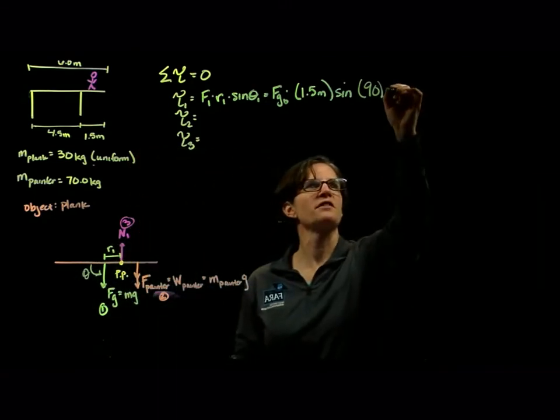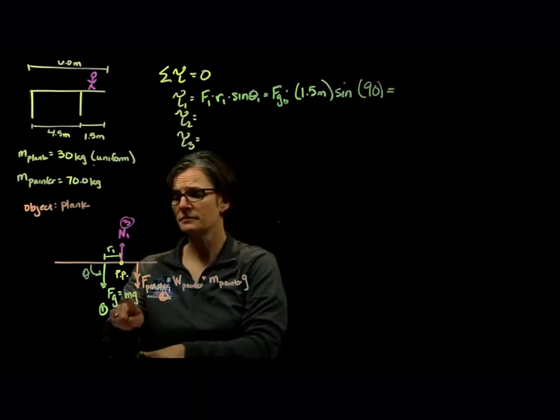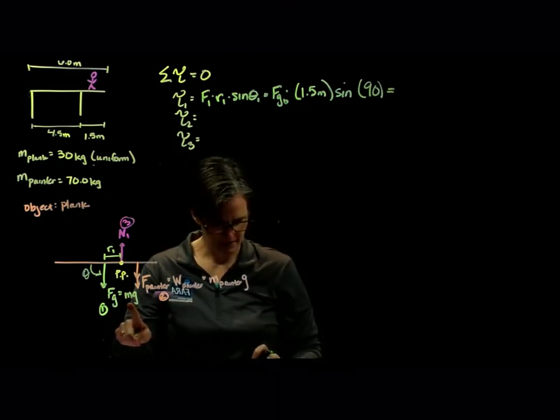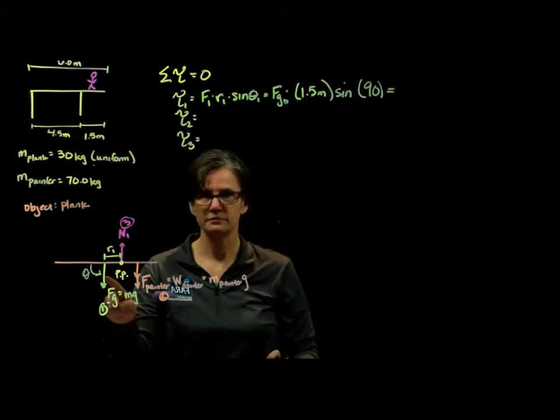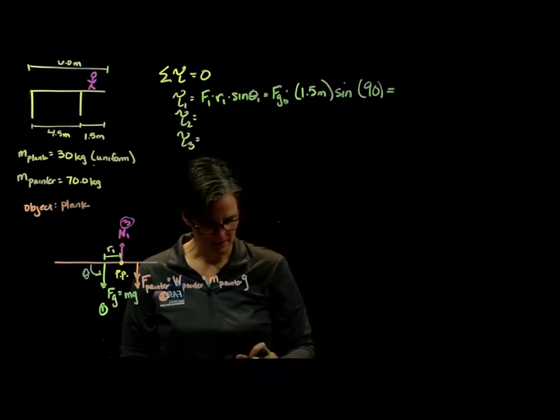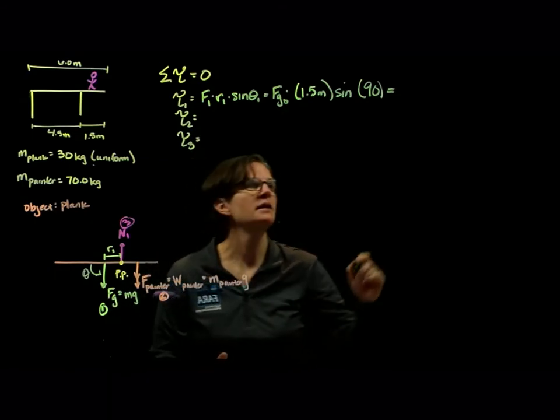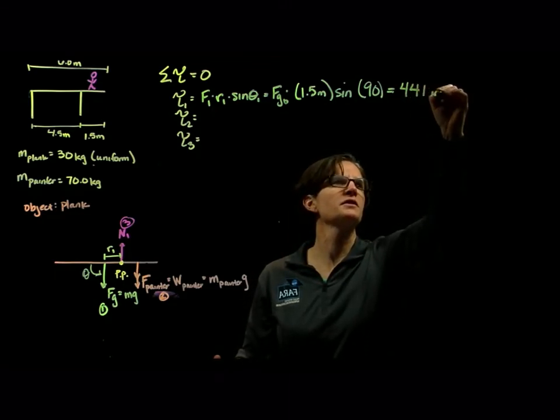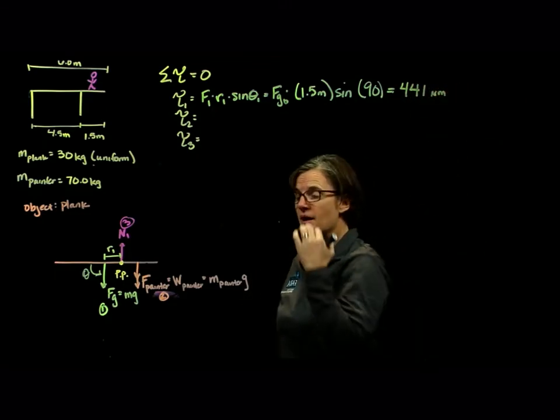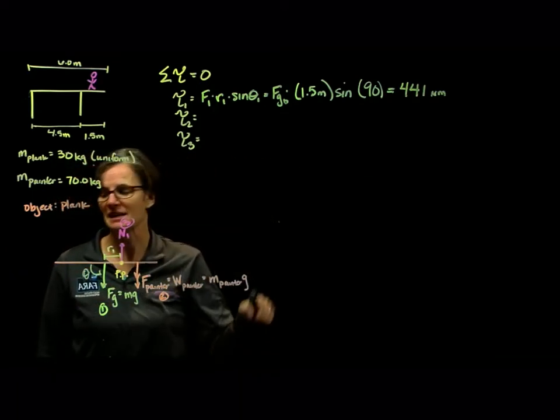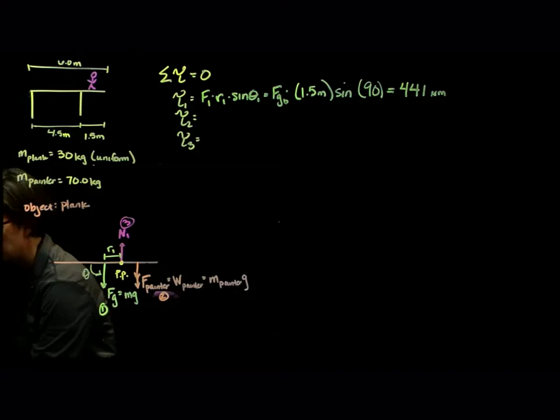Let's just go through and finish that torque. We have the force of gravity. So we have 30 times 9.8 times 1.5 times the sine of 90, which is 1. So we get 441 newton meters. We expect it to be positive because this would rotate the object in the counterclockwise direction.